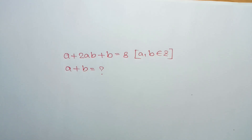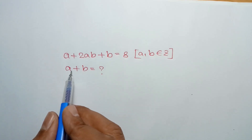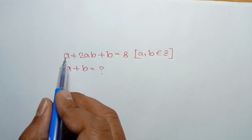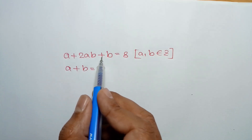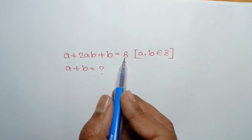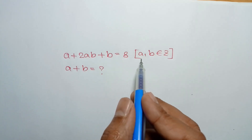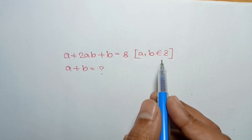Hi everyone. In this video, I am going to show how to find the value of a plus b, where a plus twice ab plus b is equal to 8, and a and b are integers.